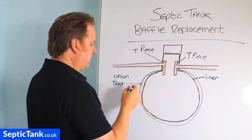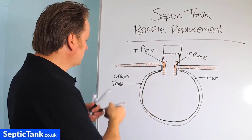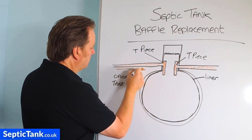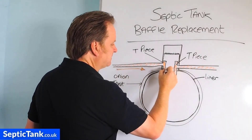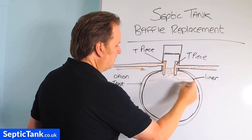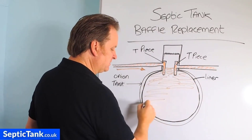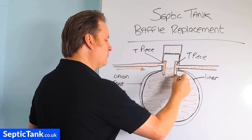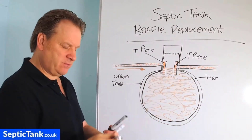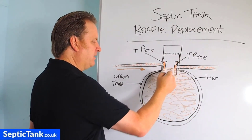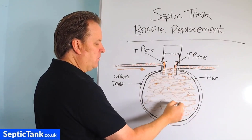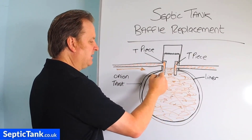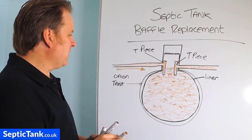What happens is the wastewater comes into the septic tank and fills it up. I've done it in brown because although wastewater sounds like a very clean name, in reality it's murky, it's brown, it's got lots of bits and bobs floating around in it. That's the reality of a septic tank — it's like a big stomach.